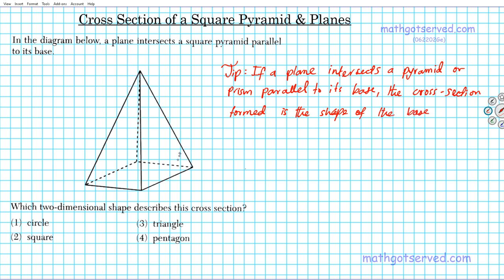So what are we seeing here? If you take a look at this square pyramid, the base is a square — we know that because it's a square pyramid. So if you have a plane intersect this pyramid at any point and it's parallel to this base, the cross section formed will be exactly the shape of the base.